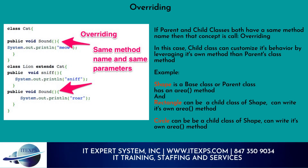What is overriding? If parent and child classes both have a method with the same name, that concept is called overriding. In this case, the child class can customize its behavior by using its own method instead of the parent's. Example: Shape is a base class with an area method. Rectangle can be a child class of Shape and write its own area method. Circle can also be a child class of Shape and write its own area method.